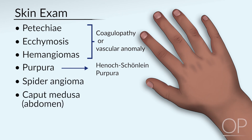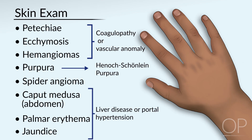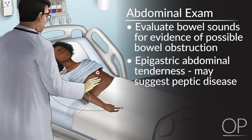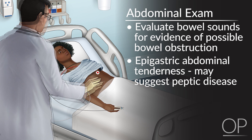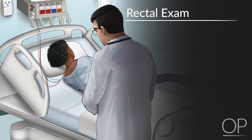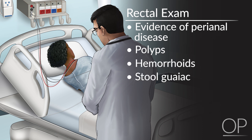Spider angioma, caput medusae, palmar erythema, and/or jaundice can suggest liver disease or portal hypertension. In your abdominal examination, evaluate bowel sounds for evidence of possible bowel obstruction. Epigastric abdominal tenderness may suggest peptic disease. Hepatosplenomegaly and ascites may suggest liver disease. It is important to do a rectal examination in a patient suspected for GI bleeding. You should look for evidence of any perianal disease. It is possible to appreciate polyps on digital rectal examination. You should also look for evidence of hemorrhoids. At the end of your exam, you should test stool for guaiac.